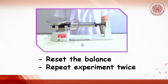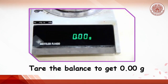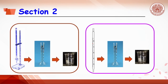Return all weights to zero and repeat the experiment twice to calculate the average weight of the aluminum cube. For the electrical balance, before weighing make sure the display shows 0.000 grams; if not, press the tare button. Place the aluminum cube in the center of the pan, and record the weight once the 'g' indicator appears on the display.